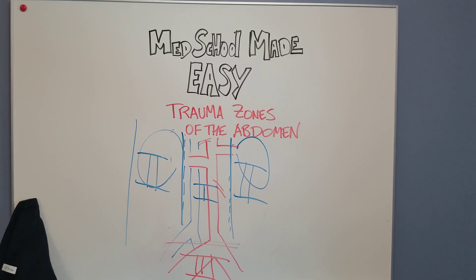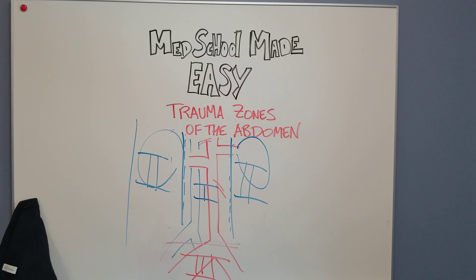One thing to note: I said that if you have a penetrating injury to any of these zones, they should be explored. But if you have a blunt injury — like a car accident — and you have a hematoma and the patient's doing okay, it does not necessitate exploration unless it's in zone one, right next to your aorta or IVC.